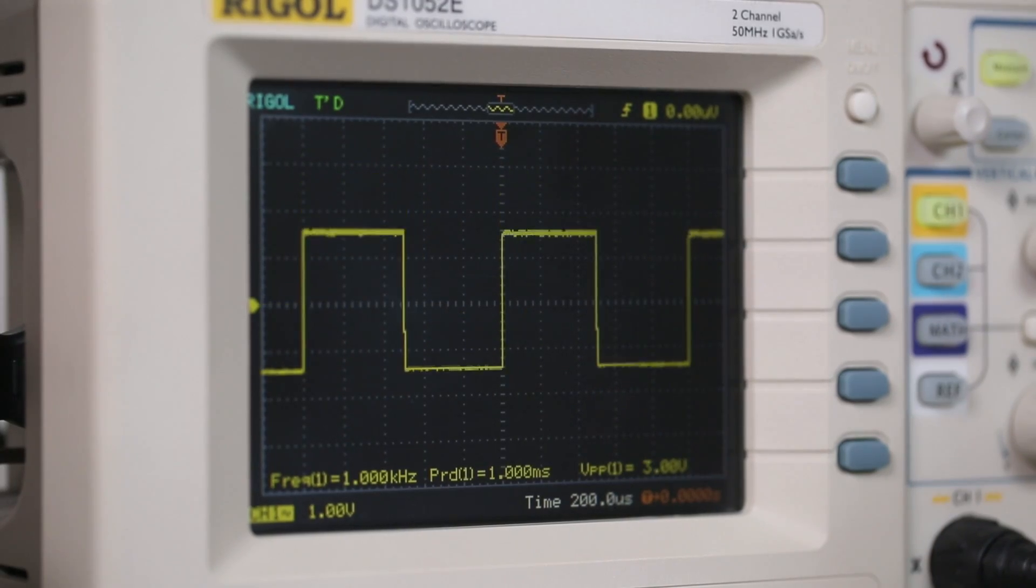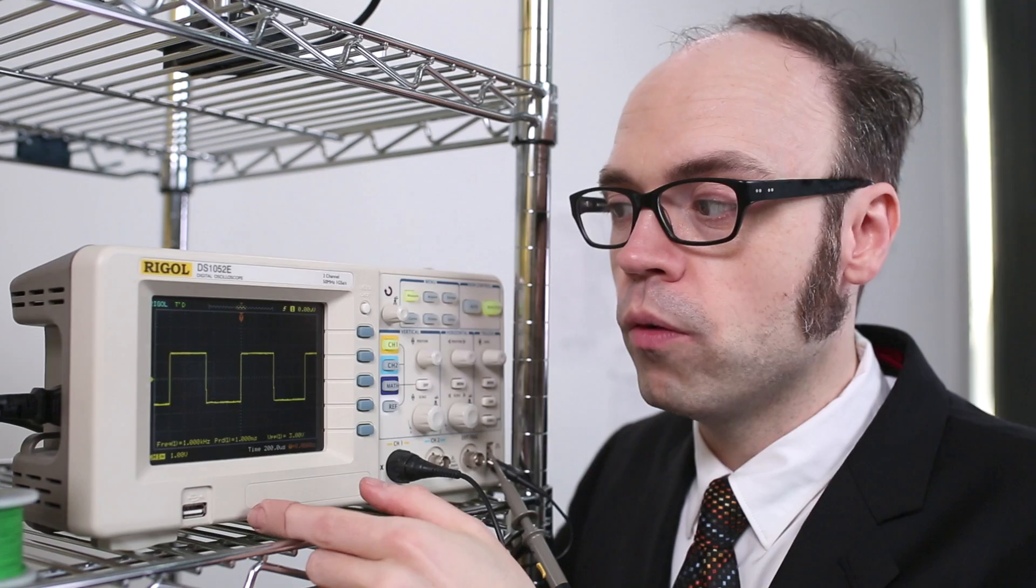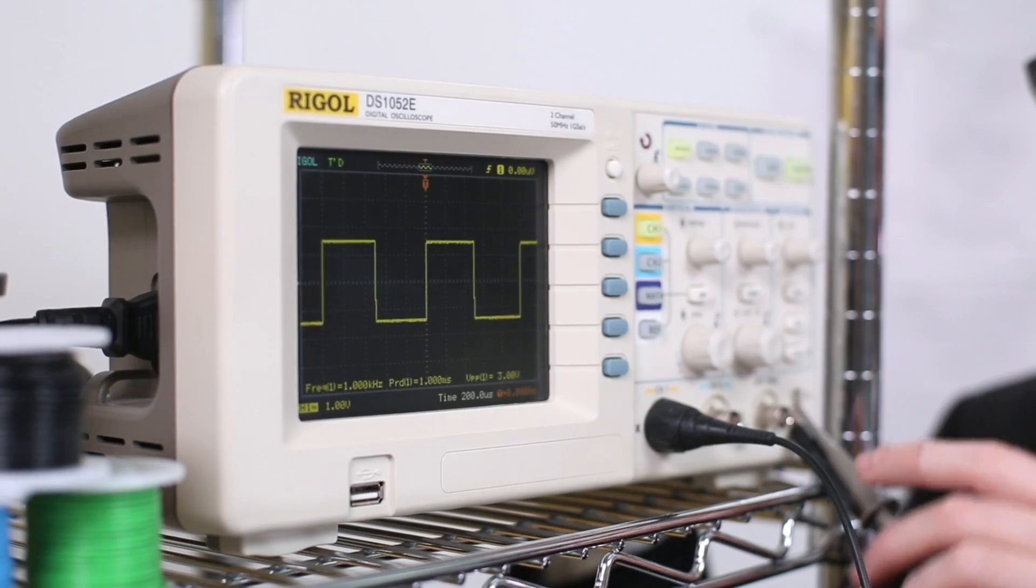The electrical signal is displayed as a waveform, with the y-axis representing voltage and the x-axis representing time.